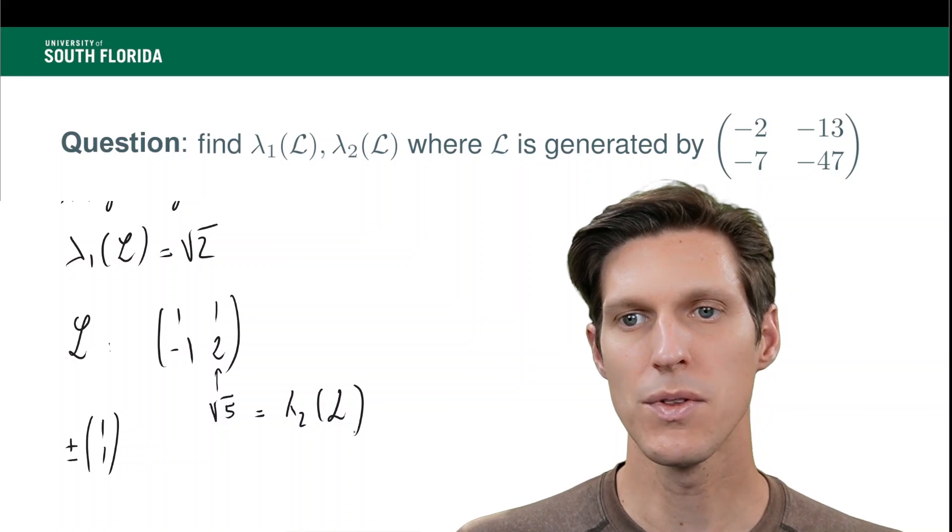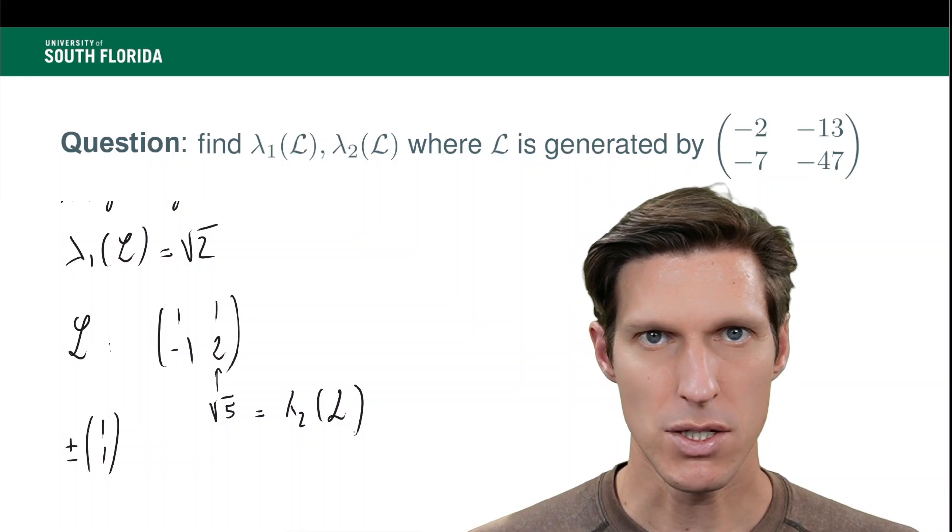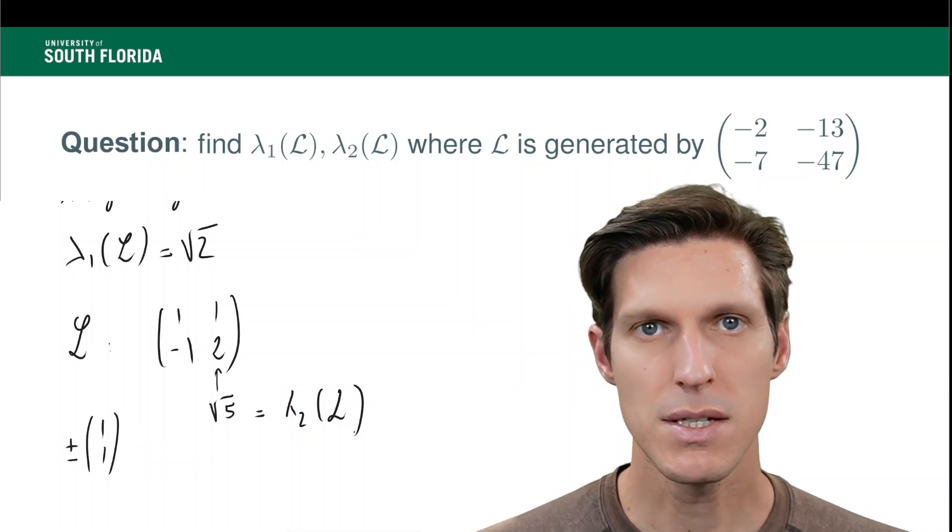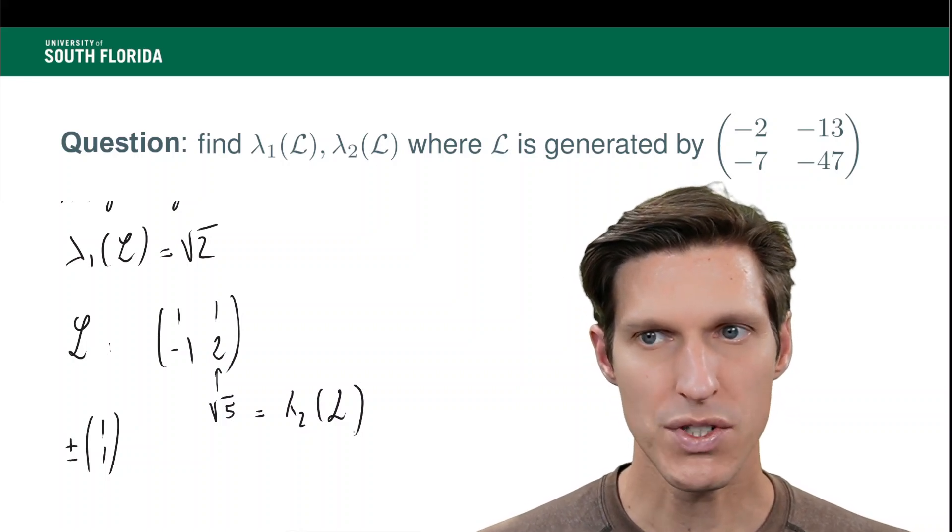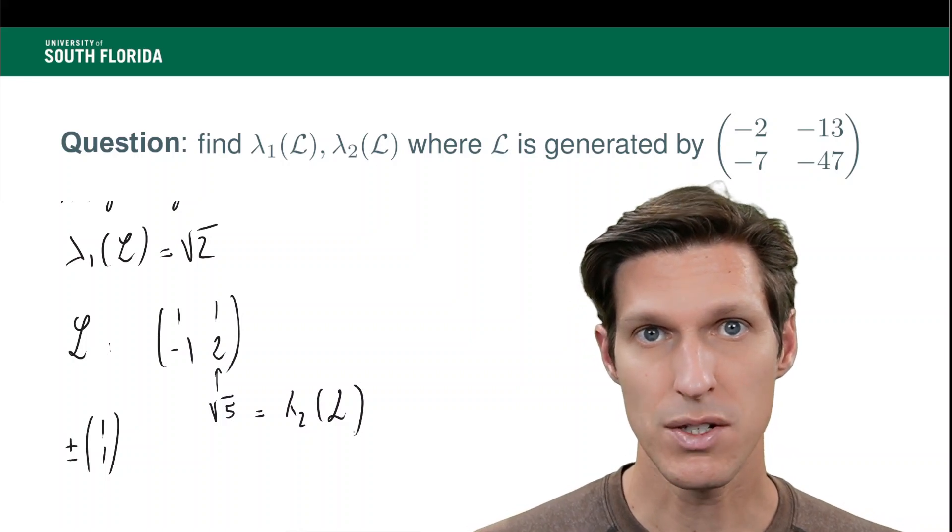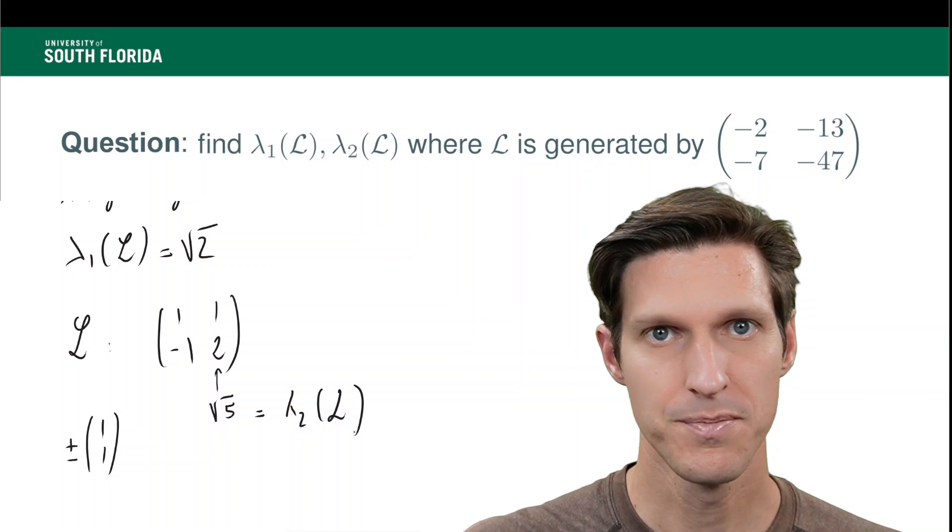So with that in mind, we have proven that lambda 1 of your lattice is square root 2, and lambda 2 of the lattice is square root 5. And this required a little bit of care just because we converged towards a basis that looked like it had short vectors did not necessarily mean that these were the shortest non-zero vectors of the lattice. Thank you very much for watching.